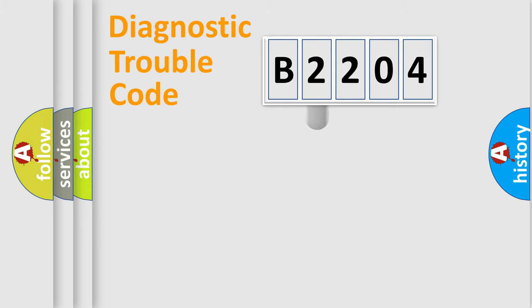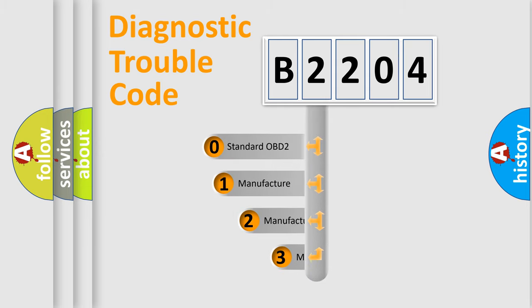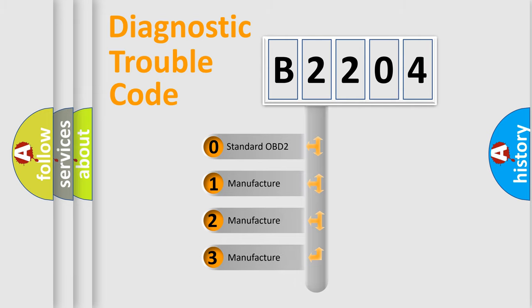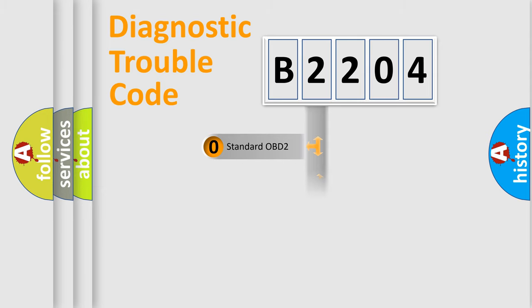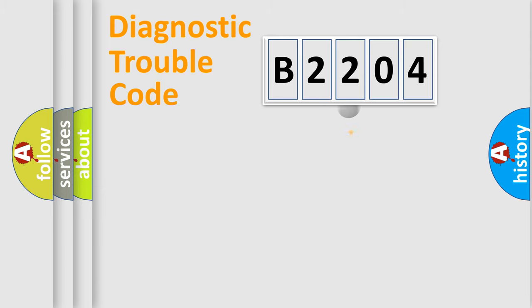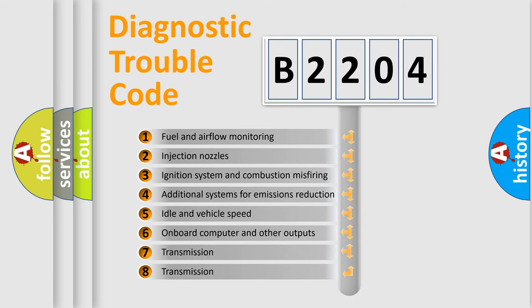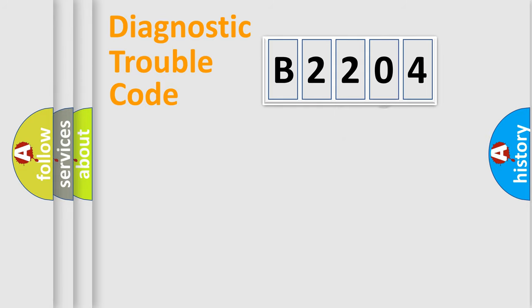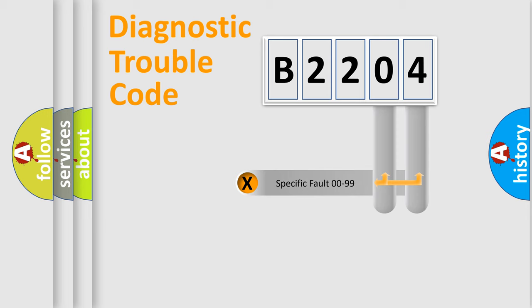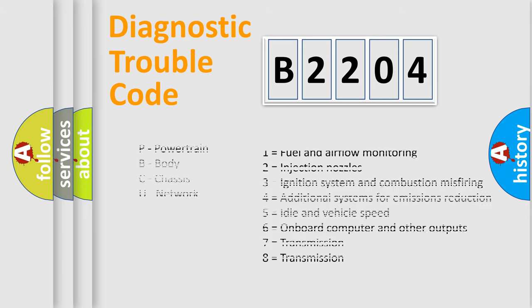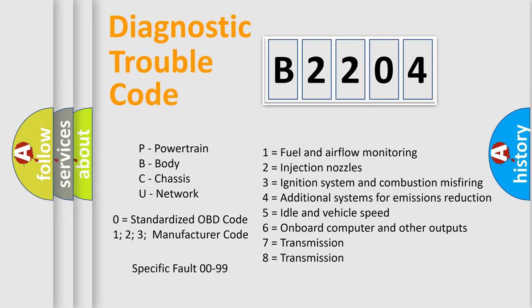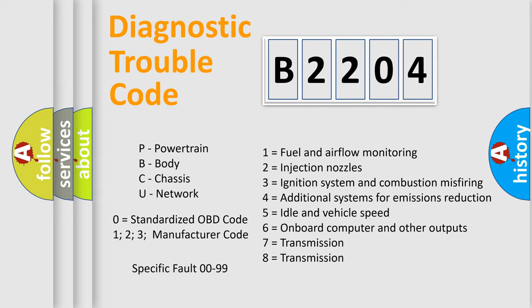This distribution is defined in the first character of the code. If the second character is expressed as zero, it is a standardized error. In the case of numbers 1, 2, or 3, it is a manufacturer-specific error. The third character specifies a subset of errors. This distribution is valid only for the standardized DTC code, and only when the second character is zero.